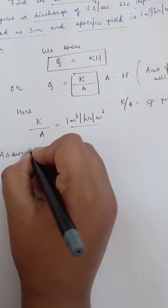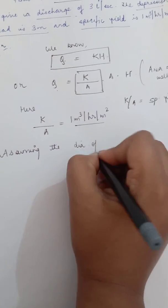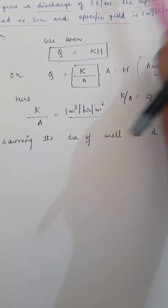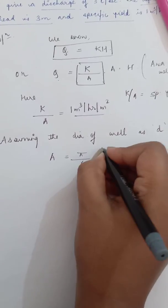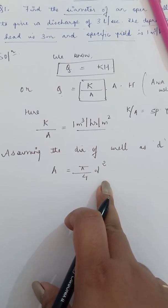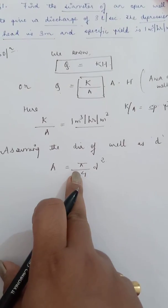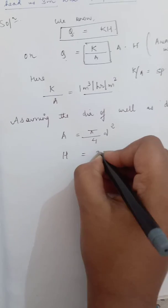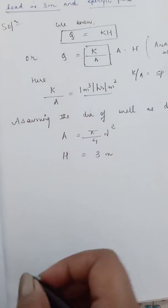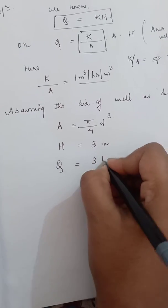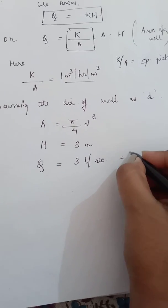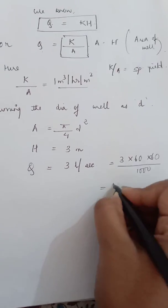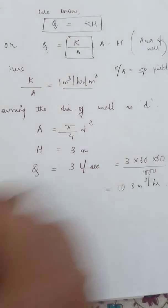Now, assuming the diameter of the well as d, the area equals pi by 4 times d squared — we use the circle area formula since an open well is circular. The depression head h is given as 3 meters and discharge q is 3 liters per second. Converting: 3 into 3600 divided by 1000 gives 10.8 meter cube per hour.